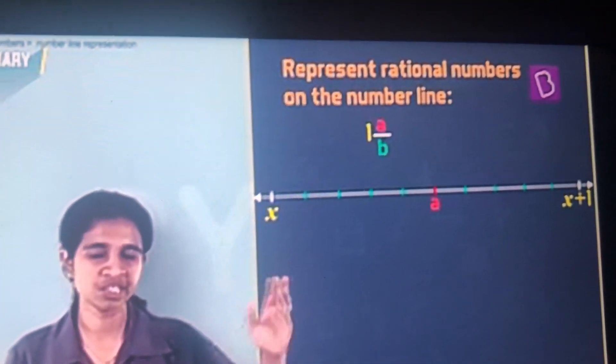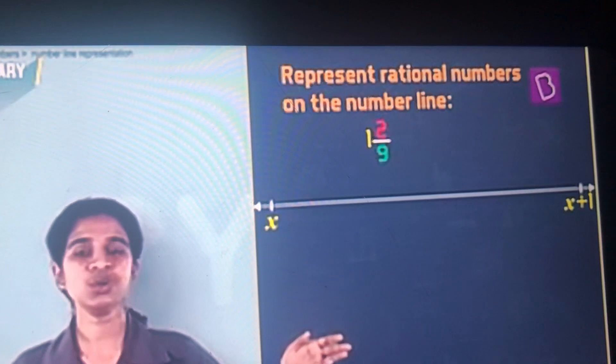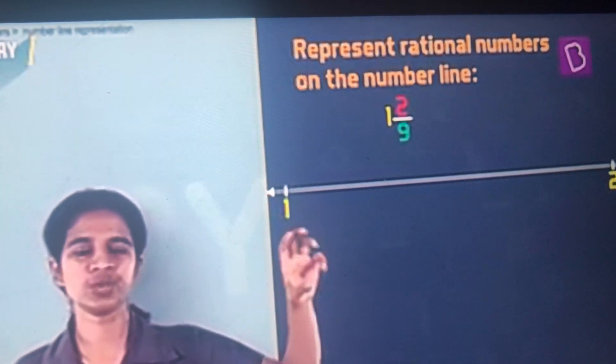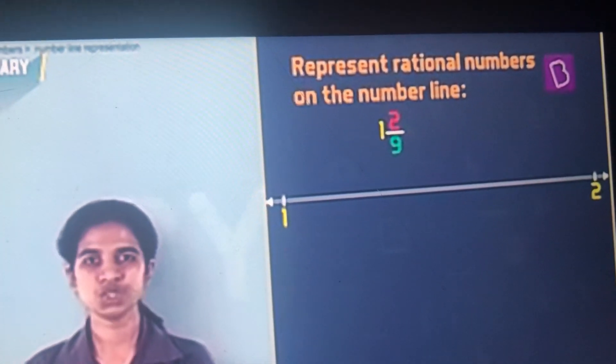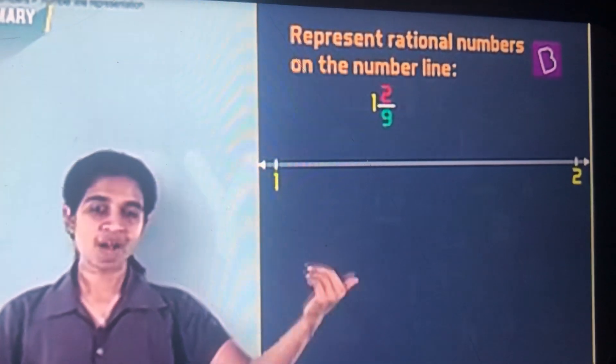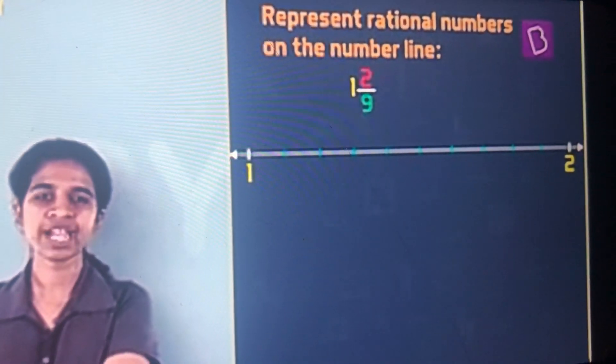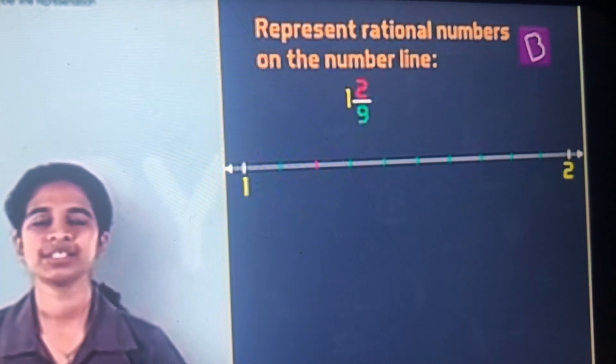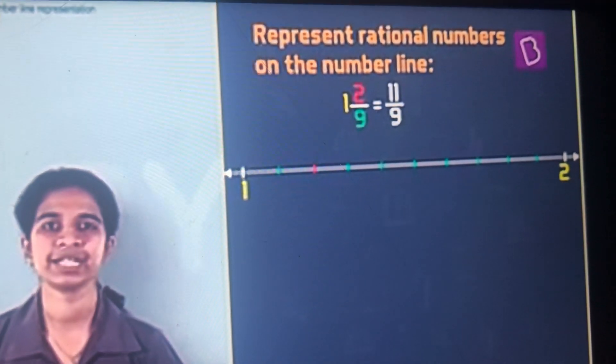So if you have 1 integer 2 by 9, it tells you the rational number lies between 1 and 2 because you have 1 integer here. Denominator is 9, so you will divide it into 9 parts. Numerator is 2, so you will pick the second part. That will give you your 11 by 9.